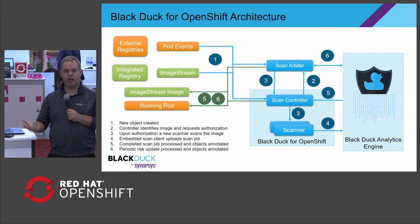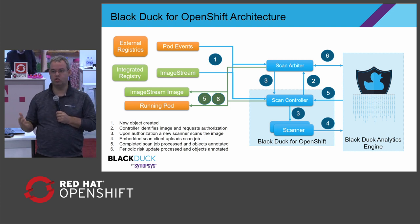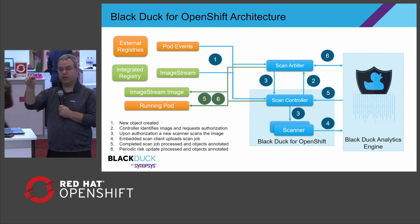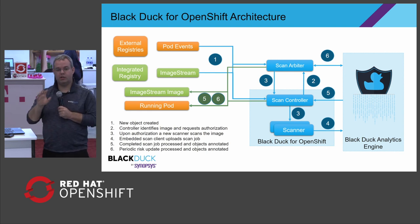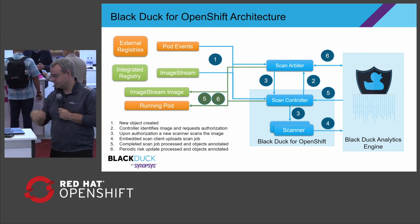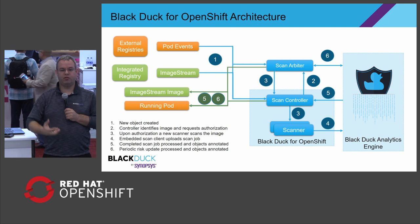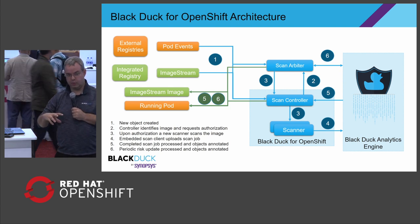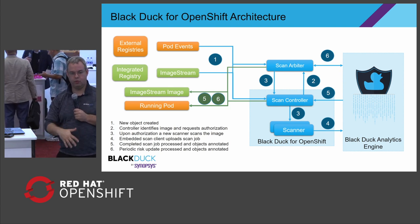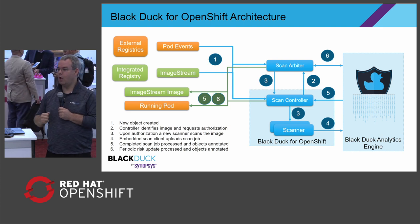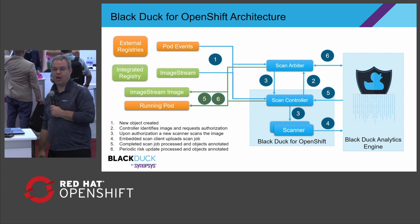I'm going to use Black Duck for OpenShift as an example of how this works. Last year at Red Hat Summit, we introduced an application integrated directly within the OpenShift environment to scan all container images independent of the registry, wherever they came from. That gives us the ability to see where events are coming from — whether they be a pod event, an image stream — and automatically scan everything associated with it. The analytics engine is something where if I have more than one cluster, I'm going to need additional capacity.